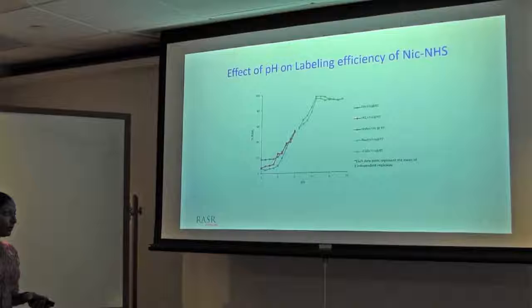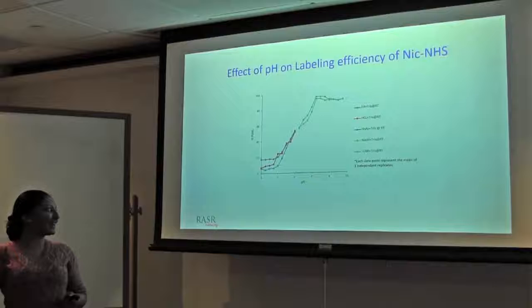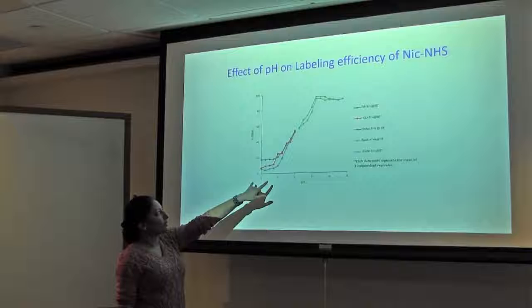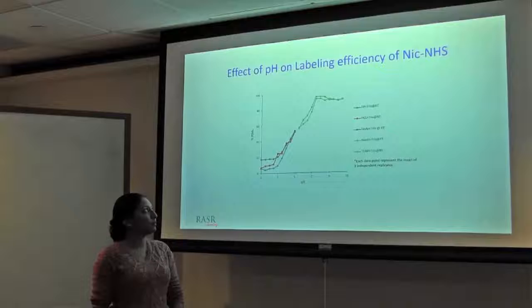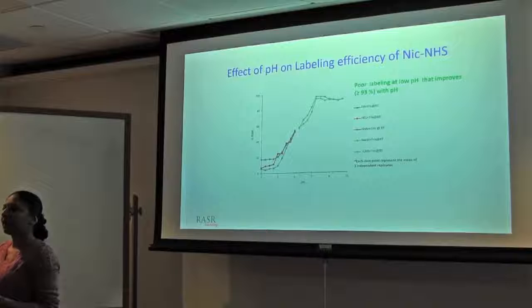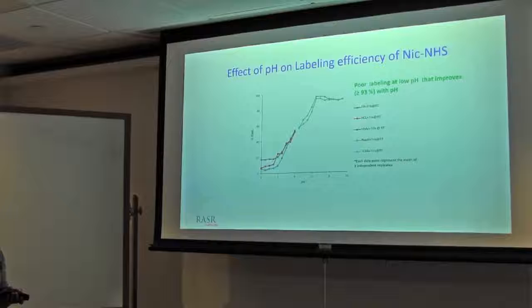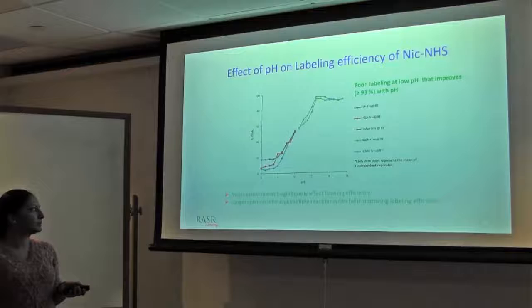The results which we got were not as we were expecting, actually. Because at acidic pH, we see only very strong acidic pH. Labeling efficiency is up to 20%. So, out of 100 peptides, only 20 peptides are labeled. However, as we are going beyond with the pH, we reach up to 93%. So, out of 100, 93 peptides have been labeled with the increase of pH. But at increase of pH, it is not N-terminally specific. It is at both sides.